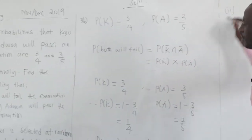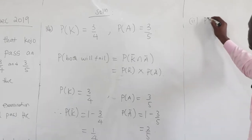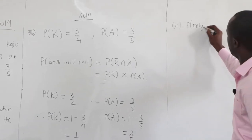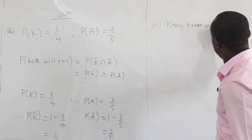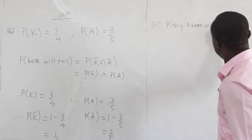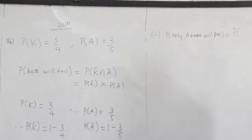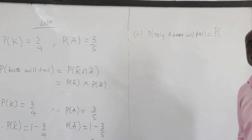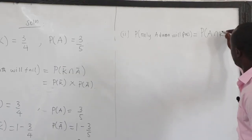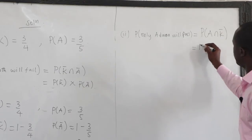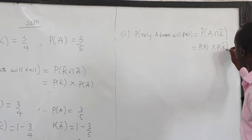The second part: we have been told that only Ajuwa will pass. So, the probability that only Ajuwa will pass — this means that if Ajuwa is passing, then Kujou will fail. So we have P of A intersection P of K complement, and this is the same as P of A times P of K complement.